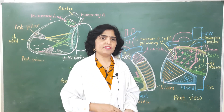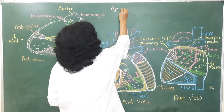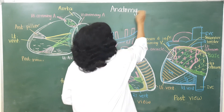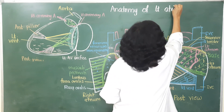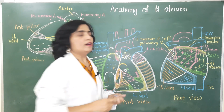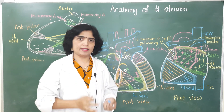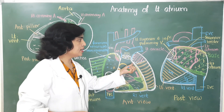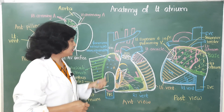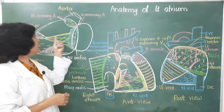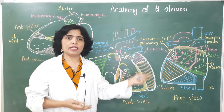Hello everyone. In this video we are going to see the anatomy of the left atrium. The heart consists of four chambers: right atrium, right ventricle, left atrium, and left ventricle. This is the anterior view of the heart and this is the posterior view. In the previous videos we have seen the anatomy of the right atrium, right ventricle, and left ventricle along with their internal features.